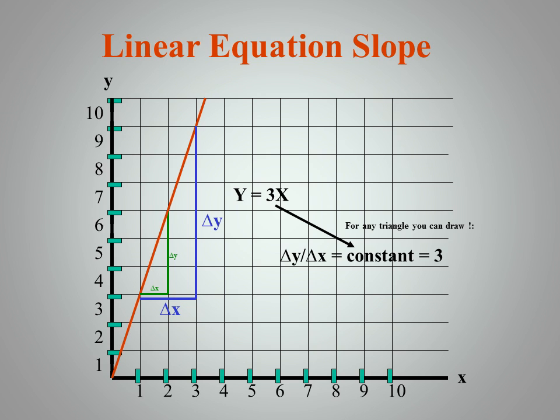So, we can see that the equation for this graph, if we weren't given it, would be Y equals 3X. The line goes through the origin because when X is equal to 0, Y is equal to 0.